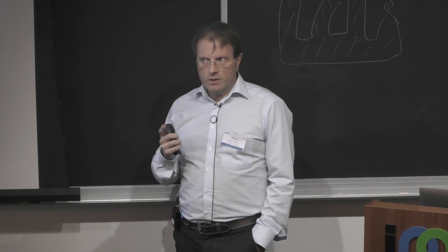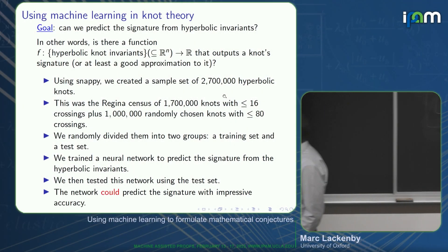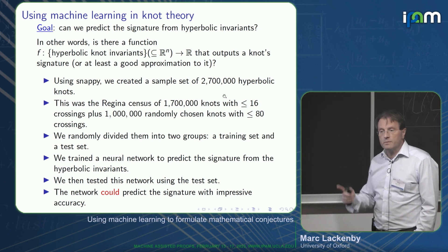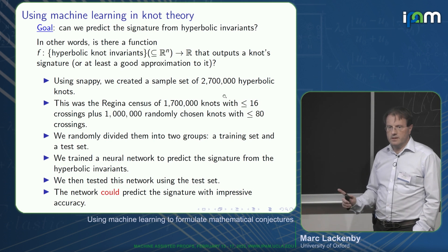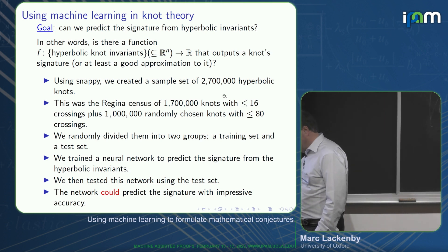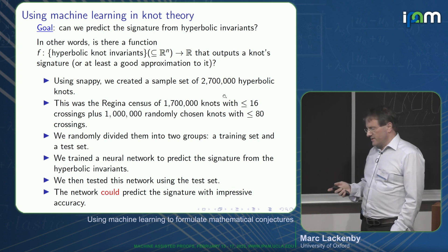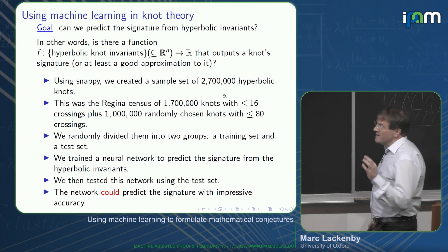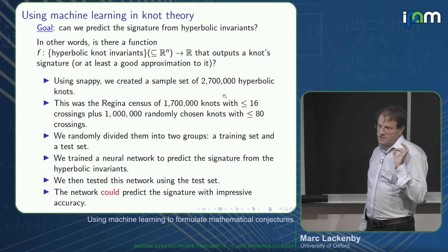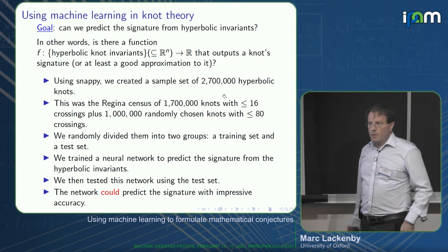The punchline is that yes, the network could predict the signature. Therefore we knew something was going on — machine learning had told us something we didn't know before. But then the problem is: it's told you that, so what do you do next? You'd like to know what is the connection between the hyperbolic invariants and the signature. The machine learning algorithms don't tell you — they don't give you an explicit F. You want to interrogate the network in some way.